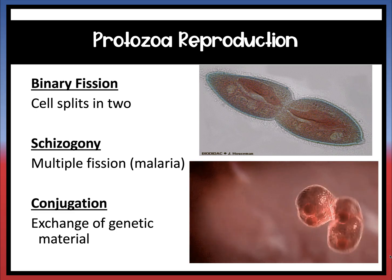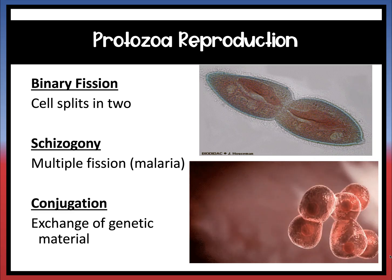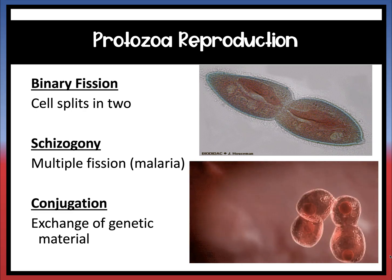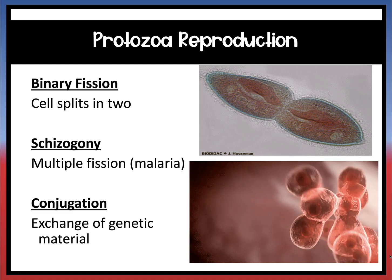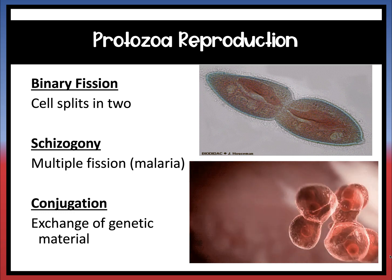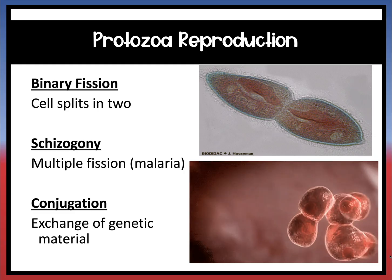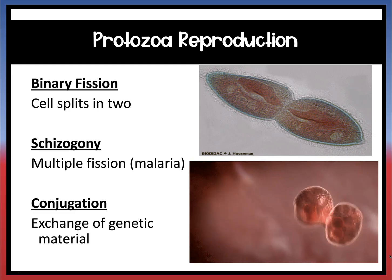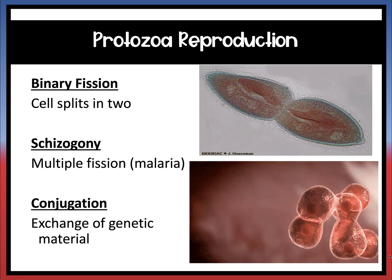For protozoa reproduction, there are three different ways. One is binary fission, where the cell splits in two, which you can see in the first image. The next is schizogony, which is multiple fission — malaria is an example of this. You can see the cells dividing repeatedly in the animated image. Think of blowing bubbles and making a whole bunch at once. The last one is conjugation, which we talked about with bacteria — this is an exchange of genetic material.